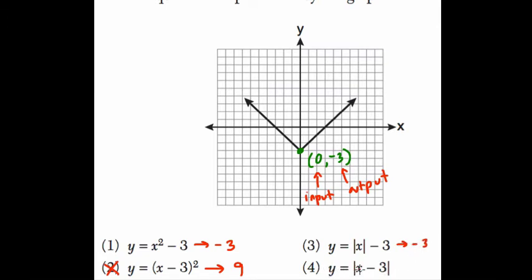And choice 4, if you have 0 minus 3, that's negative 3, but we're taking the absolute value of that, that would give you positive 3. We don't want positive 3. We need to have negative 3. This point represents an input-output for this function. So there's only two choices left.